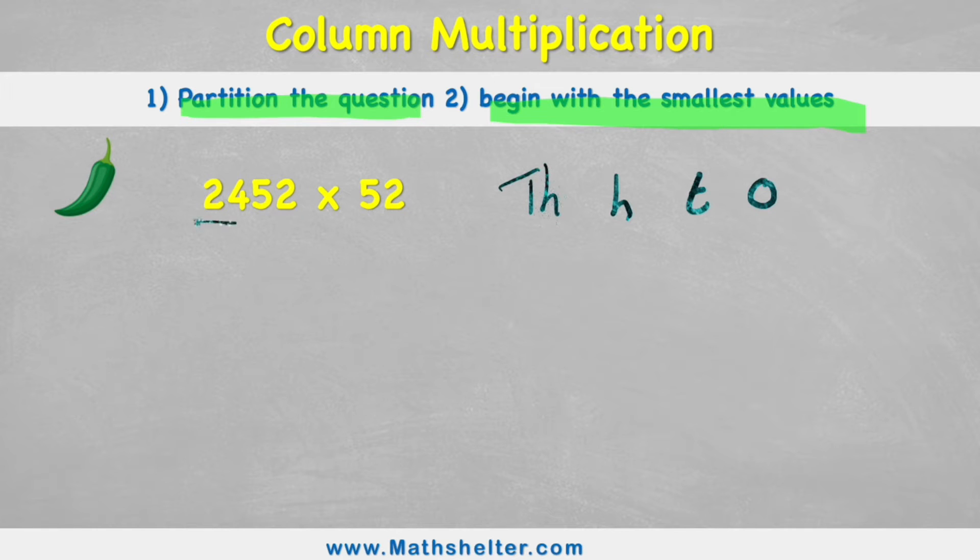Now this helps me put my 2,452 in the correct place. So 2,452 is made up of 2 thousands, 4 hundreds, 5 tens, and 2 ones. And my 52 is 5 tens and 2 ones. Put my equals line and I'm ready to begin.